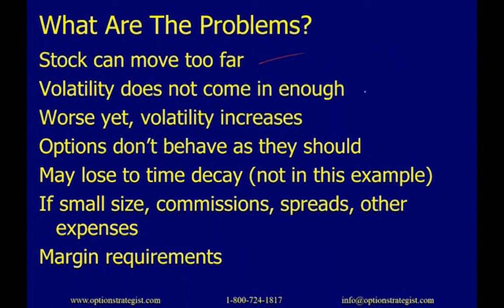What are the problems with delta neutral? The stock could move too far. Volatility might not come in enough, or worse, could increase — though that rarely happens right after earnings; volatility almost always returns to its equilibrium level within a day or two. Options may not behave as they should. You may lose to time decay. If you're doing small size, commissions, spreads, and expenses matter. And there are margin requirements — you may need more capital in the account to support short option premiums.